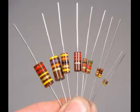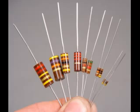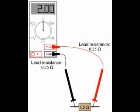This opposition to motion is more properly called resistance. The amount of current in a circuit depends on the amount of voltage available to motivate the electrons and also the amount of resistance in the circuit to oppose electron flow. Just like voltage, resistance is a quantity relative between two points. For this reason, the quantities of voltage and resistance are often stated as being between or across two points in a circuit.